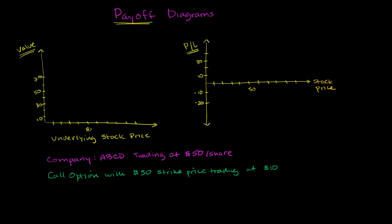This one just worries about the actual value of the options at expiration. This worries about the profit and loss. So this will incorporate what you paid for the option. This will not. This just says what it is worth.